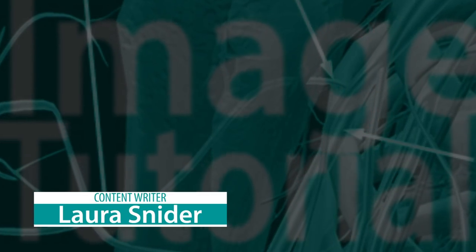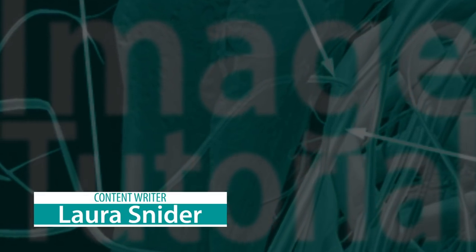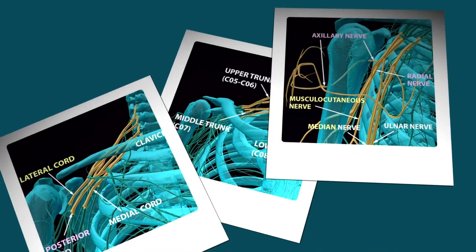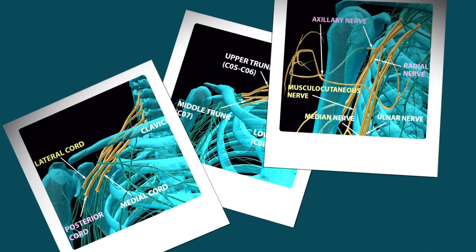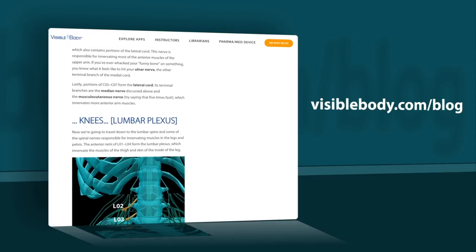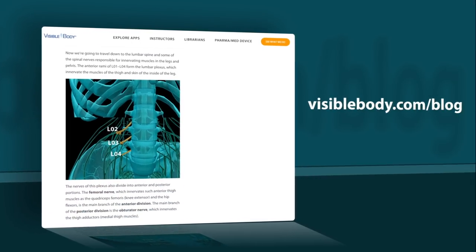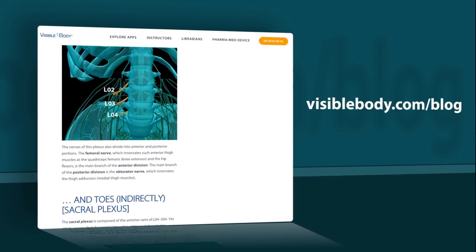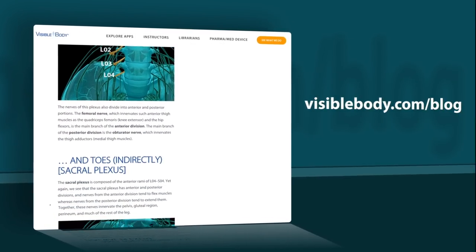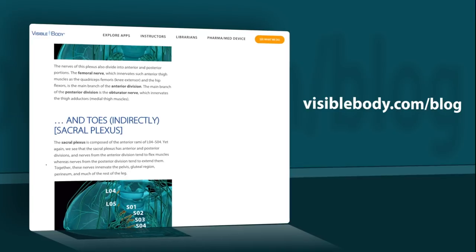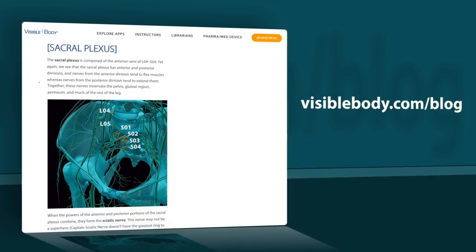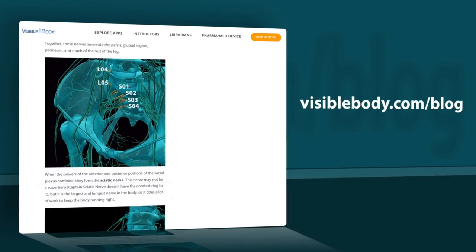Hi everyone, Laura here. In this video, I'm going to be teaching you how to make photo-negative images like the ones I created for the Spinal Nerves blog. It's actually super simple to do in Atlas, so you'll be able to use images like these in no time for your own courses, assignments, or presentations.